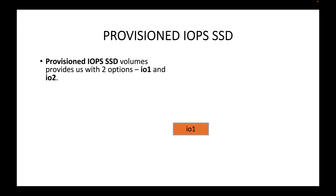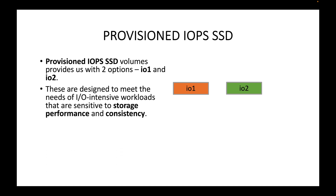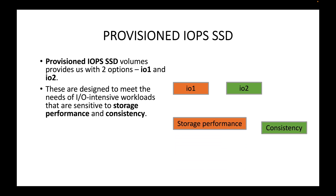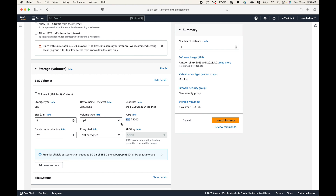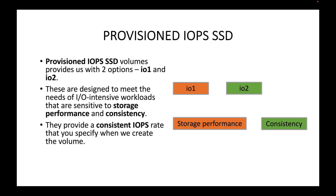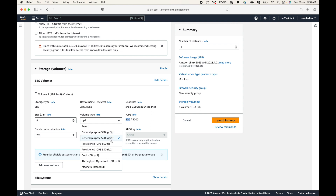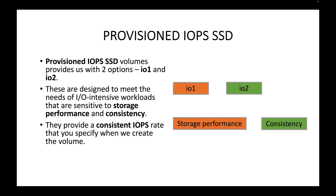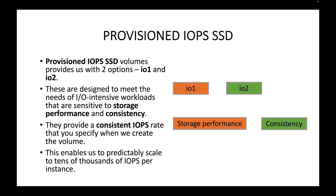Next we have Provisioned IOPS SSD storage. Under this we have two types: IO1 and IO2. These are designed to meet the needs of intensive I/O workloads that are sensitive to storage performance and consistency. If you are very concerned about storage performance or data consistency, you can go with Provisioned IOPS. These volumes provide a consistent IOPS rate that you can specify when you create the volume.